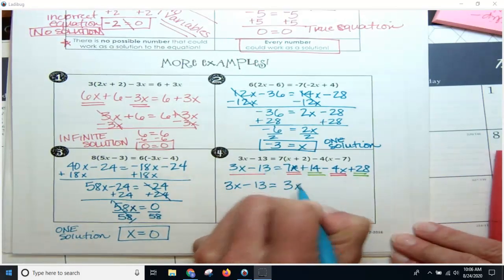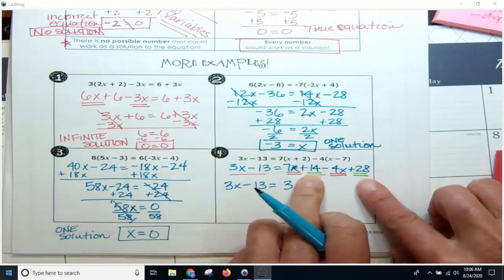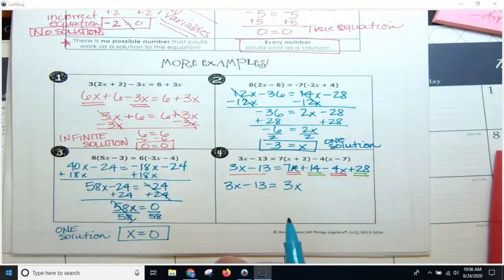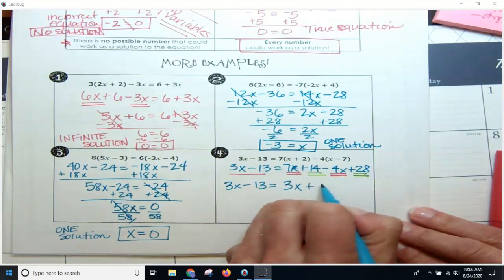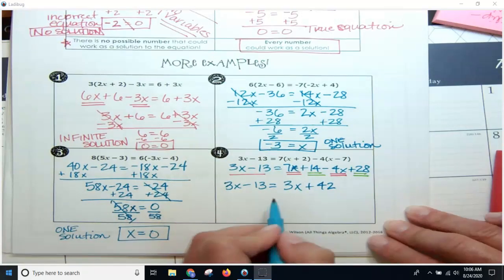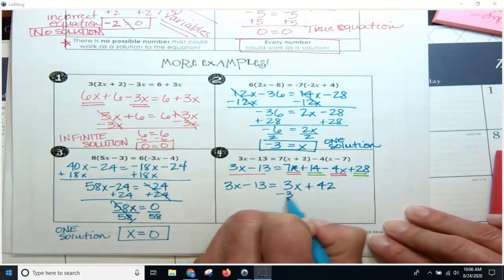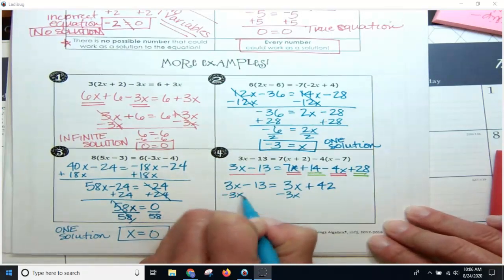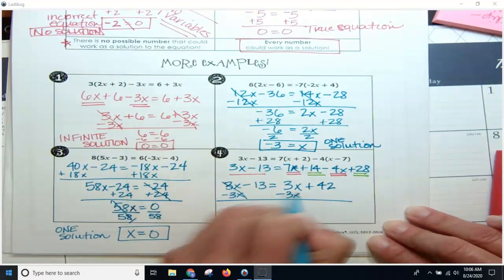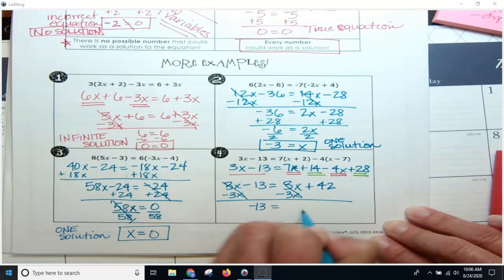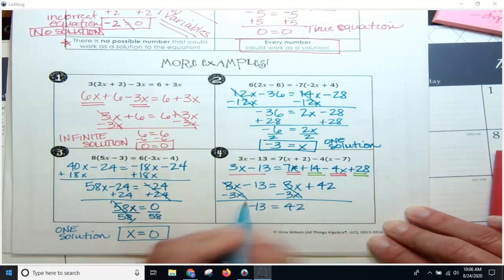So now when I subtract 3x, I'm going to get negative 13 equals 42. When I add 13 over here, I'm going to get 0 equals 55.